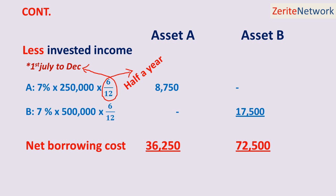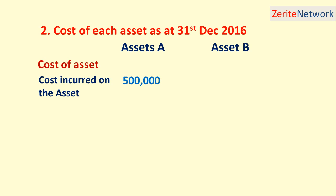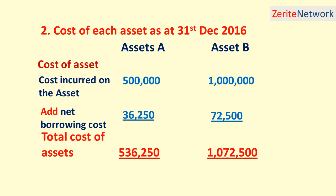The second question was the cost of assets as at 31st December 2016. In order to get the cost of assets, we need the costing for each asset. For Asset A it was $500,000, and for Asset B it was $1,000,000. We then add the net borrowing cost: for Asset A it was $36,250, and for Asset B it was $72,500. So the total cost of assets is: for Asset A, $536,250, and for Asset B, $1,072,500.